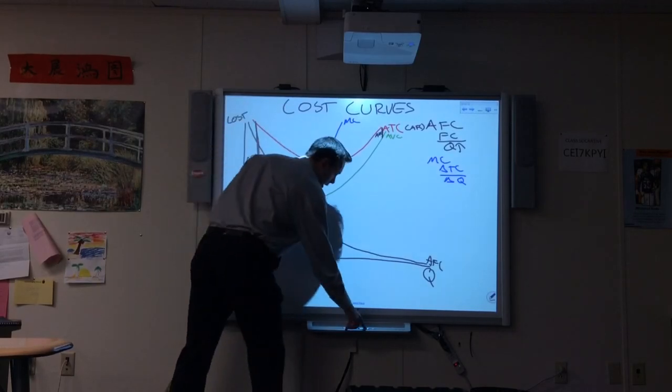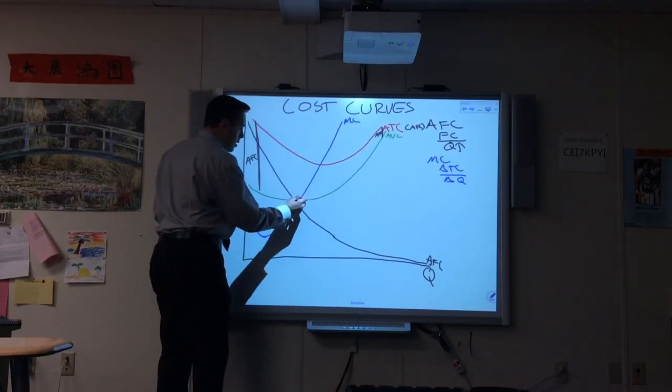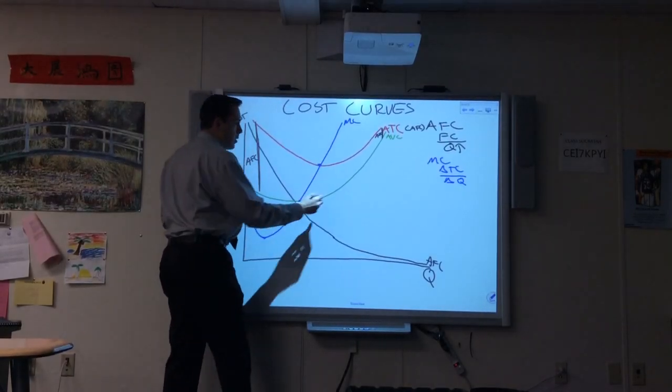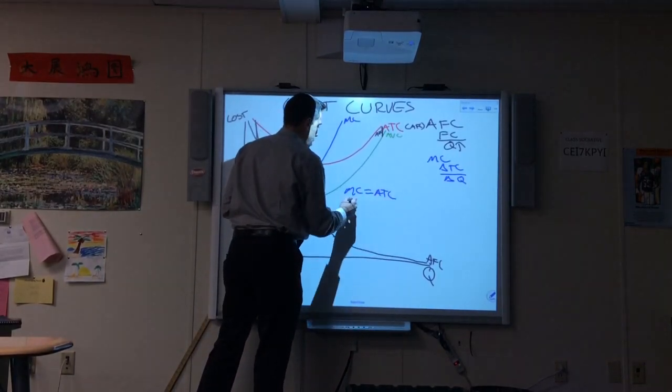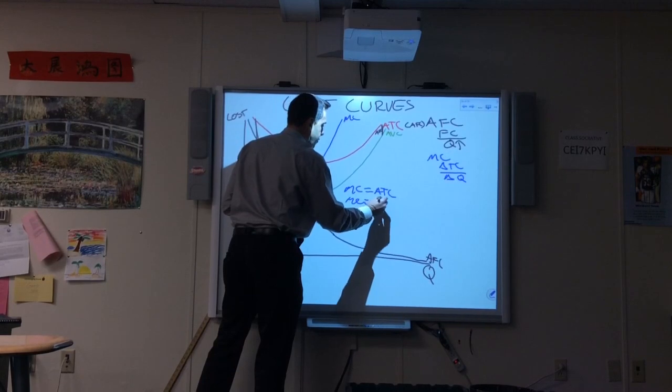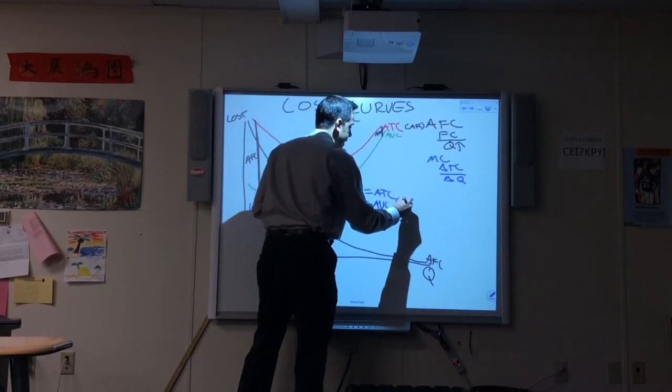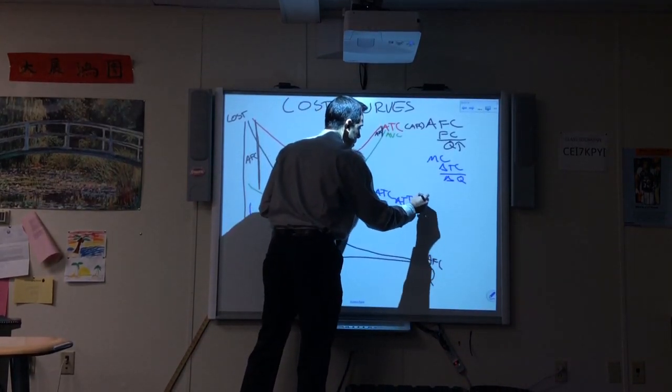The other important thing here are the intersections. Marginal cost will equal average total cost, and marginal cost will equal average variable cost at their minimums.